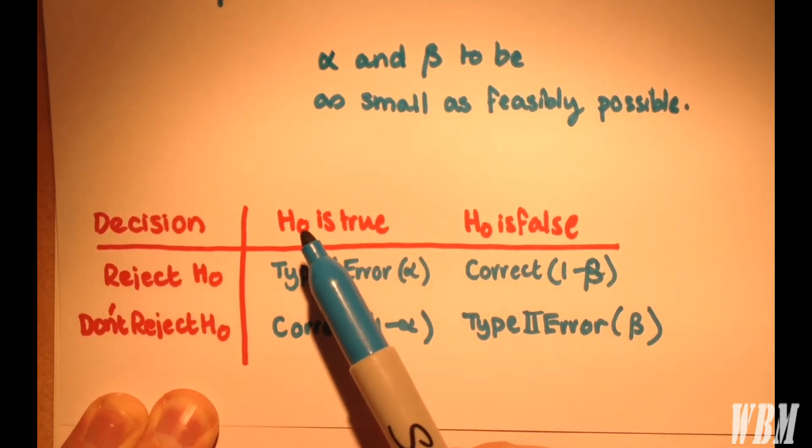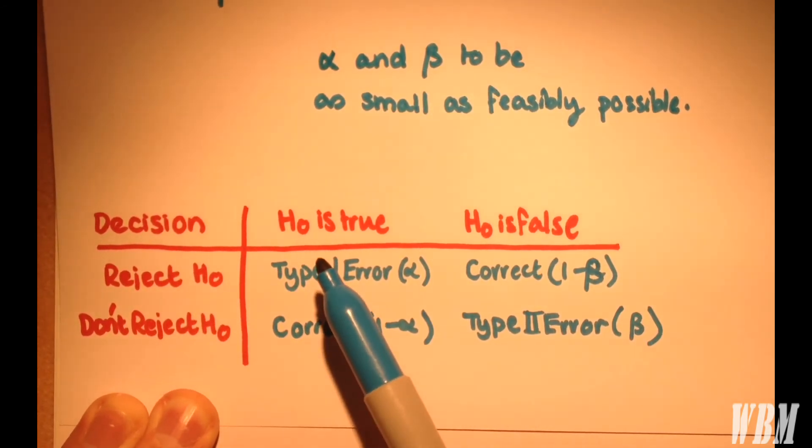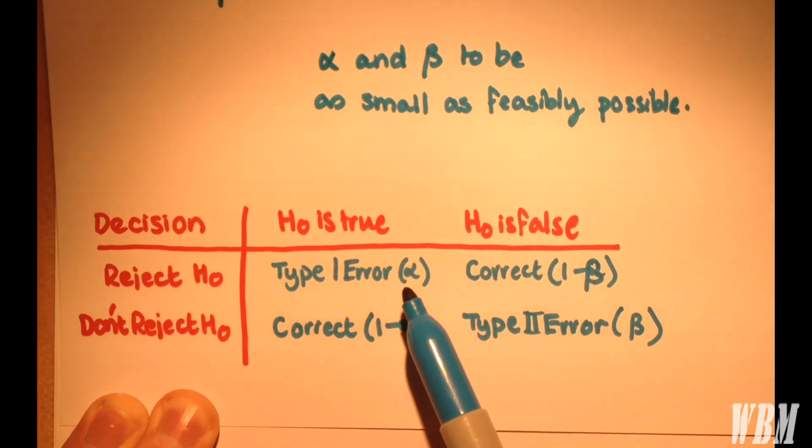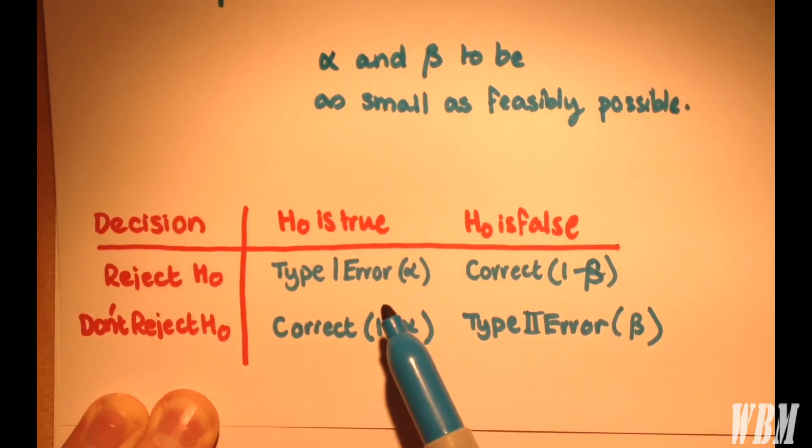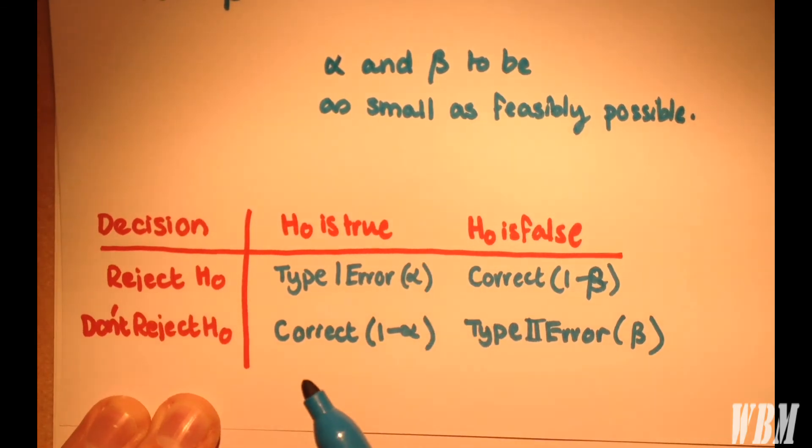However, if the hypothesis is true and we reject it, this is a false positive which is a Type 1 error, and the probability of that is the significance level alpha. And it follows for this here as well. Thank you for watching.